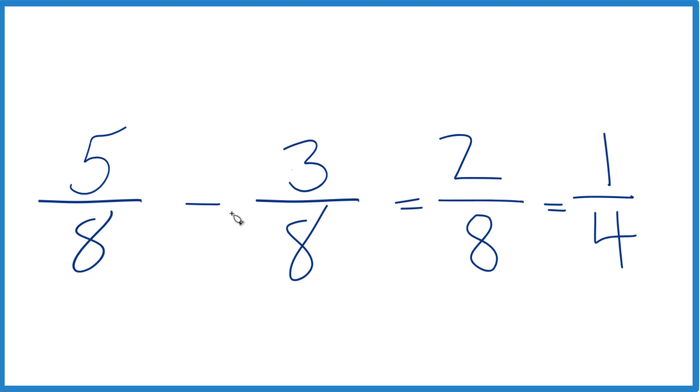So in answer to our question, 5 eighths minus 3 eighths, that equals 2 eighths, and you could call it 1 fourth. It's probably a better answer there for you.